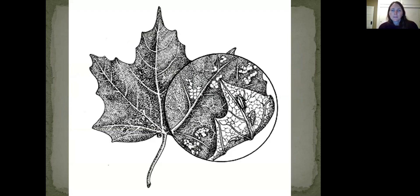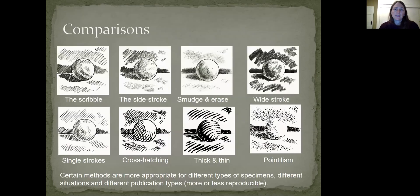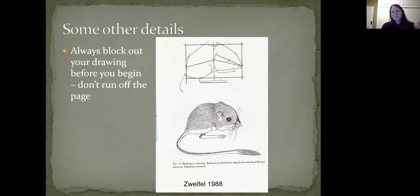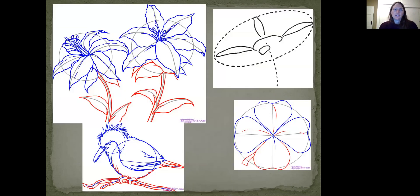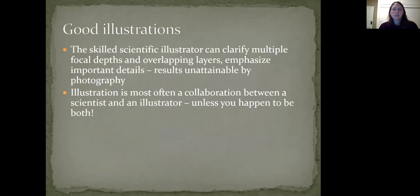Here are some examples of a stippled drawing showing the underside of a leaf and a close-up. You can use neat close-up techniques and pop-outs to provide highlights. Here are comparisons of different methods side by side — what a white ball on a white table looks like using these different methods. When you're drawing something, it's always good to block out the major shapes before you start so you don't run off the page. Start with a basic block shape, make sure you have enough space on your paper, then add the details. A skilled scientific illustrator can clarify multiple focal depths, overlapping layers, and emphasize important details — things really unattainable by photography.